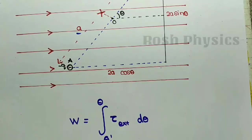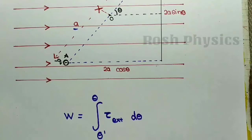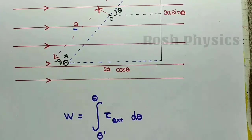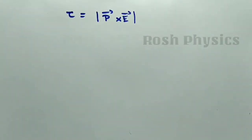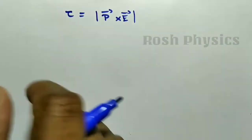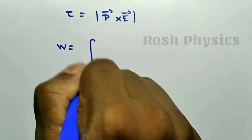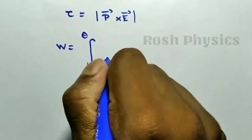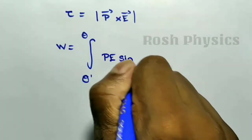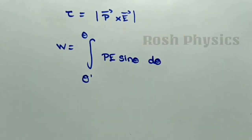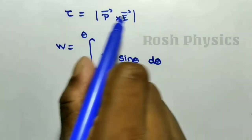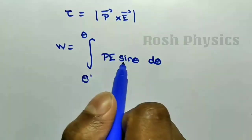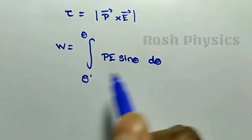By referring to the formula for torque experienced by an electric dipole from previous videos, we know that τ = |p⃗ × E⃗|. Substituting this torque value for the external torque, we get W = ∫(θ' to θ) pE sinθ dθ. The sinθ appears because for a cross product in vector form, you replace the cross symbol with sinθ.